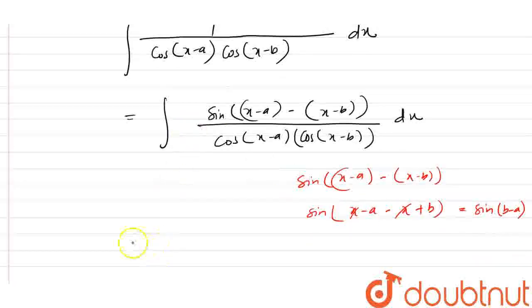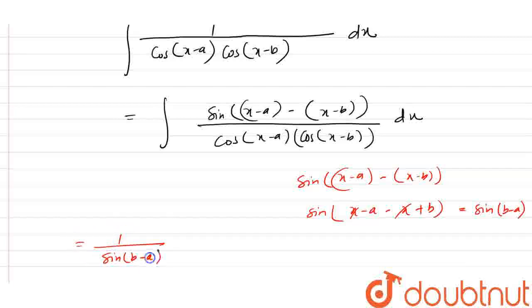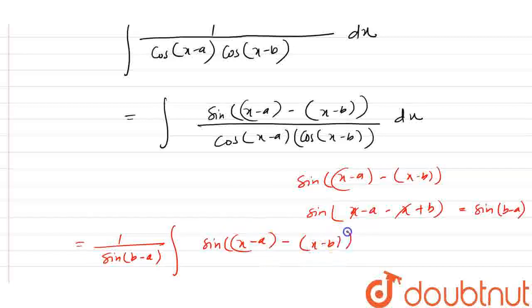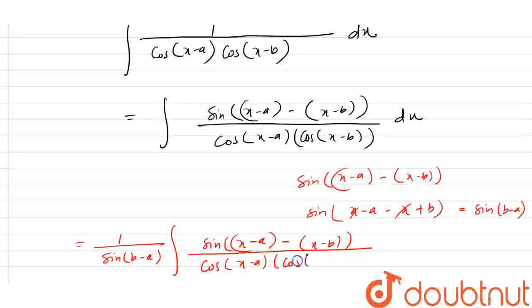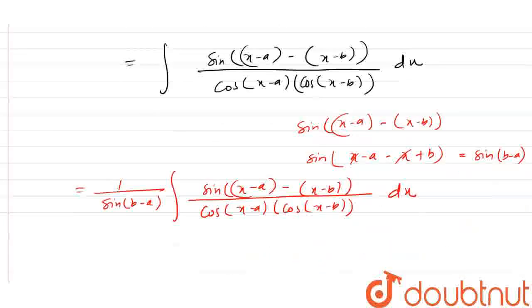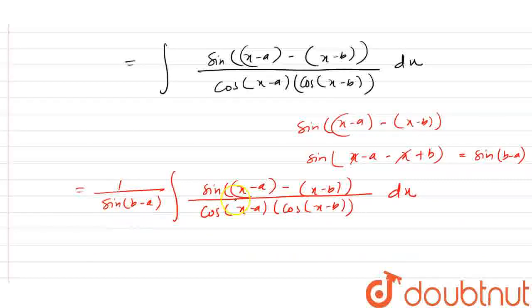So we divide this integration by 1 upon sin(b minus a). This equals 1 divided by sin(b minus a) times the integration of sin[(x minus a) minus (x minus b)] divided by cos(x minus a) into cos(x minus b) dx. Since b and a are constants, 1 upon sin(b minus a) is also constant, so we take it outside the integration.